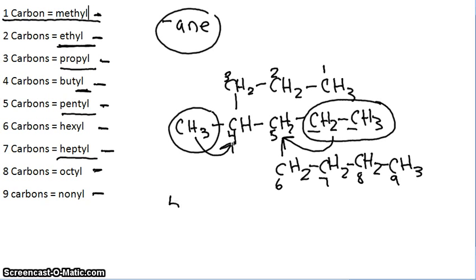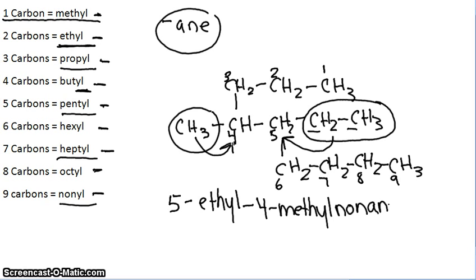So you write five dash ethyl dash, and then the methyl is coming off carbon number four. So four dash methyl. And then your carbon chain has nine carbons, which is nonyl, and it has all single bonds. So our last part of the name is nonane. So that compound is called five ethyl, four methyl nonane. Hopefully that helped you with your organic compounds.